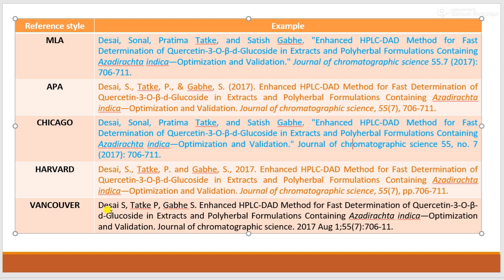In Vancouver style, there is the surname, then the abbreviation of the given name, then the title of the paper, then the name of the journal, followed by the year of publication, month of publication, and volume in brackets, then the issue number and page number. The page number is written in a shortened form; for example, 706-11 means pages 706 to 711.